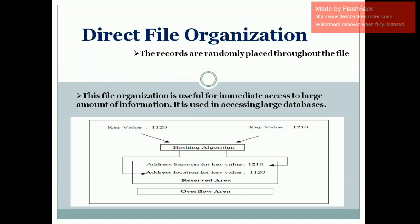If the memory or file is full and there is no space to store data, then we go for the overflow area. Suppose the record capacity is 10 — we are able to store only 10 records. If you want to enter an 11th record, it is not possible within the same memory, so it moves to the overflow area. In the overflow area, there is no hash technique implemented; data is arranged in order.